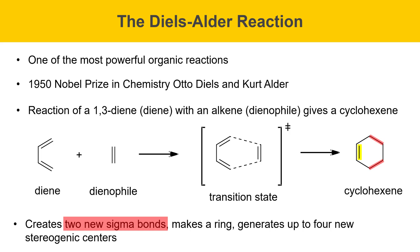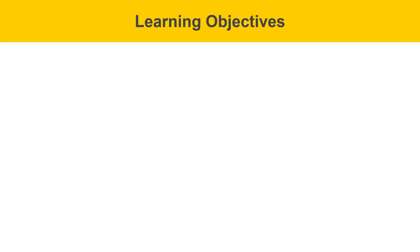This reaction creates two new sigma bonds, indicated in red. It also makes a ring and generates up to four new stereogenic centers that occur at the ends of the red-indicated bonds in the product. This product has no stereogenic centers, but with more complicated dienes and dienophiles, up to four new stereogenic centers can form.